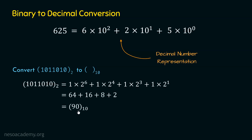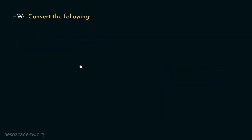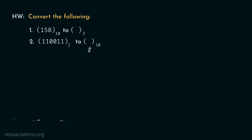So 90 is the equivalent decimal number of the binary number 1011010. This is how we can convert any binary number to its decimal equivalent. We are done with binary to decimal conversion. Now we need to see the homework problem. Your job is to convert 158, given in decimal, to its binary equivalent. Then convert the binary number 110011 to its decimal equivalent. After obtaining the equivalent numbers, post your answers in the comment section.